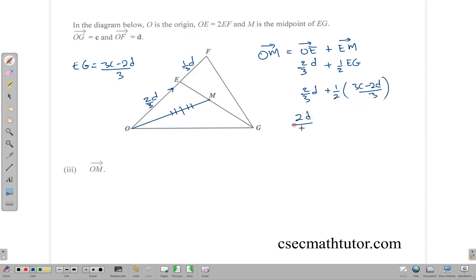So to get from O to M, given that you can't access it directly, the alternate route, or the easier alternate route would be O to E, and then E to M, which means 2 thirds of D going in that direction, plus a half of EG. So 2 thirds of D, plus a half of EG, and EG is equal to 3C minus 2D over 3. This gives us 2D over 3, plus 3C minus 2D over 6, which gives us 3C plus 2D over 6.